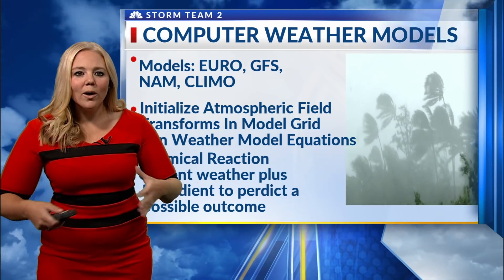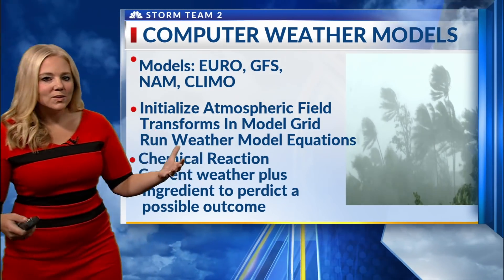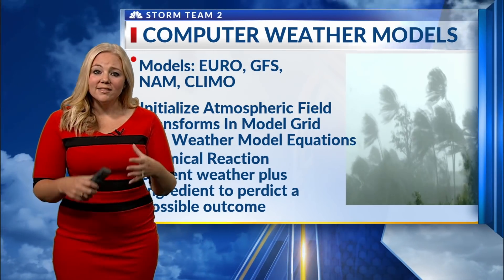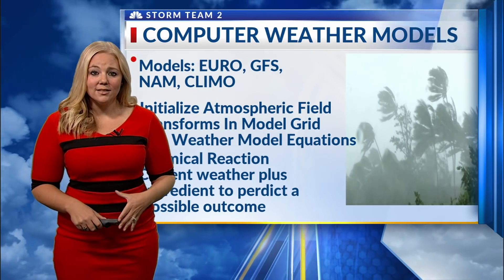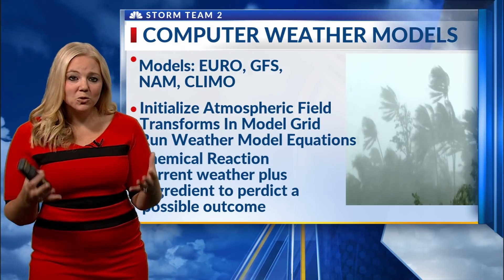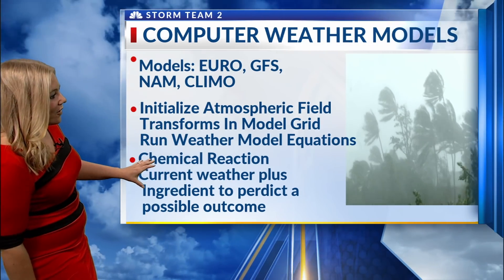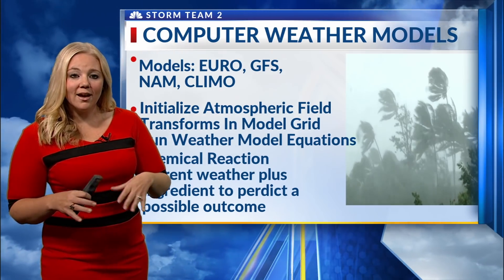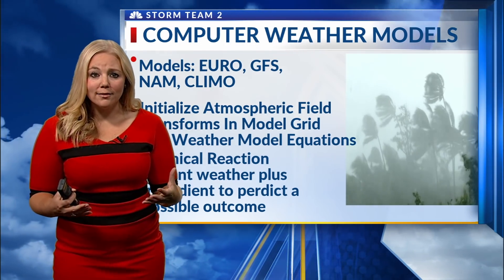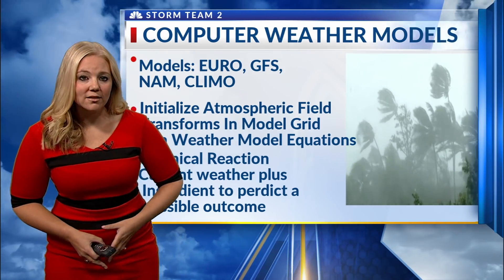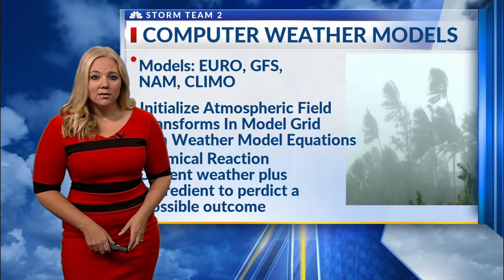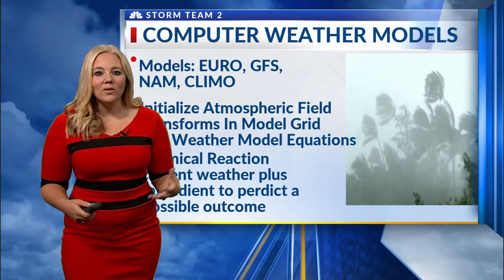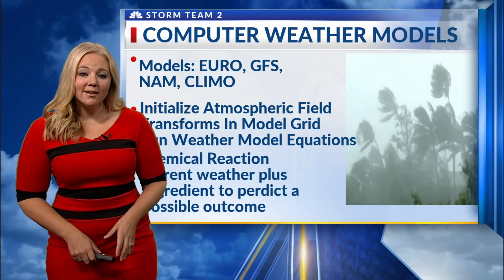An easy way to think about what a model is — it's like a chemical reaction. The model is the scientist combining different things. You're starting off with the current weather, and you're going to add different ingredients at different rates, and you have to predict the possible outcome. Sounds pretty tough, right? Well, that's why we look at so many different models.